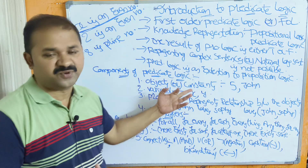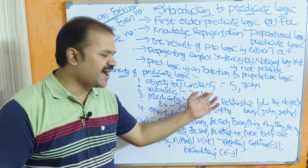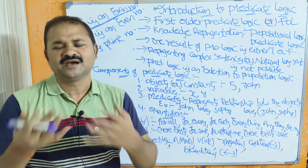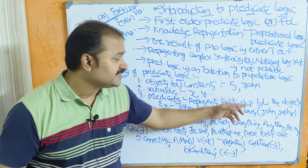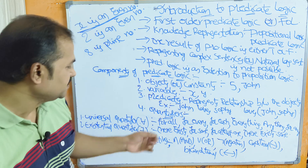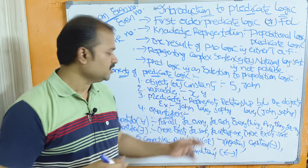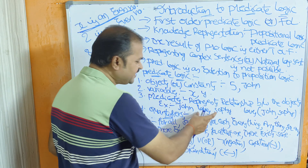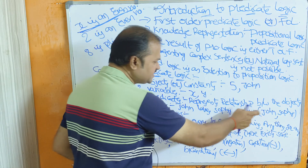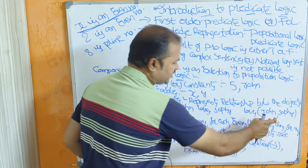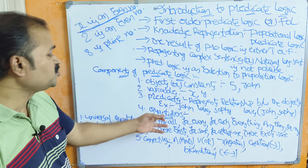The second component is variables. Variables are used for storing values — x, y, z, a, b, c are all variables. The third component is predicates. A predicate represents the relationship between objects. For example, 'John loves Sophie' — here 'loves' is the predicate, with John as the first argument and Sophie as the second argument.